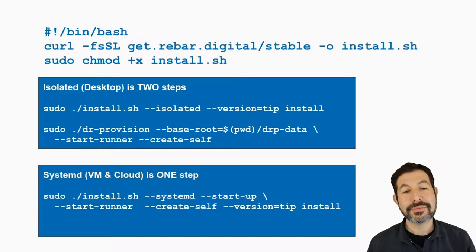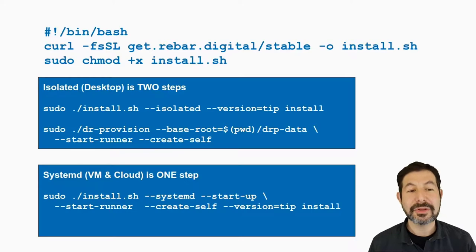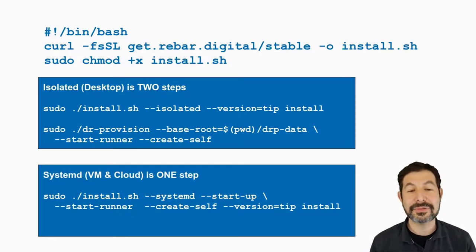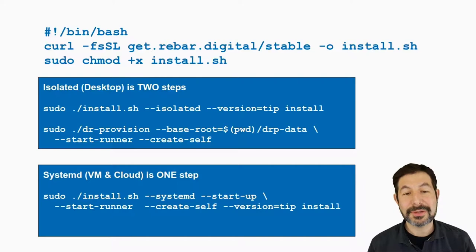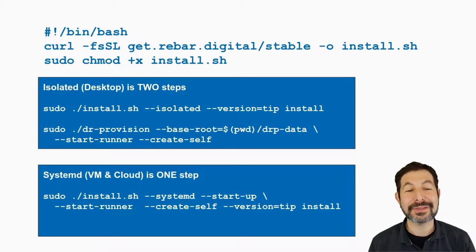All three of these processes have the same basic steps: they download our install.sh from get.rebar.digital, make it installable, and then run install.sh with 'install' as the argument. The difference in isolated mode is that you tell it you want an isolated system and ask for the version you want — usually 'tip' or 'stable' — depending on whether you want the latest features or just the last release.